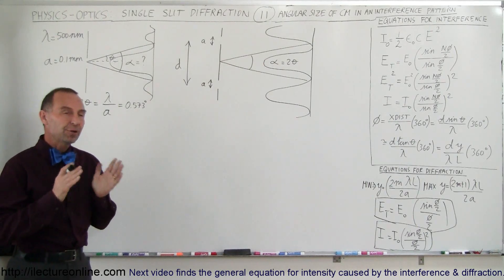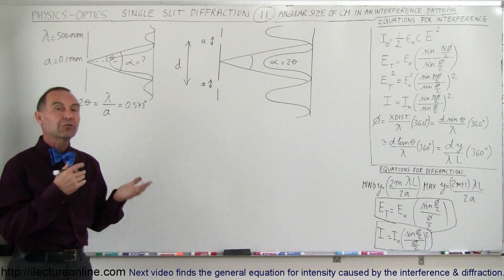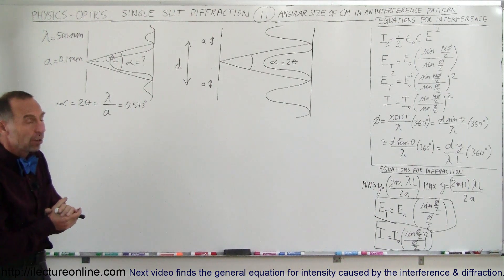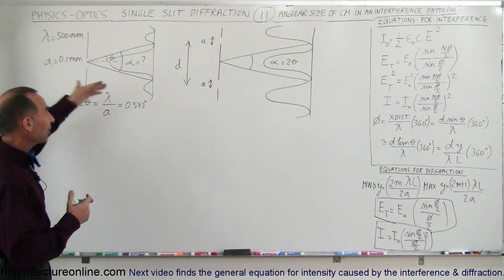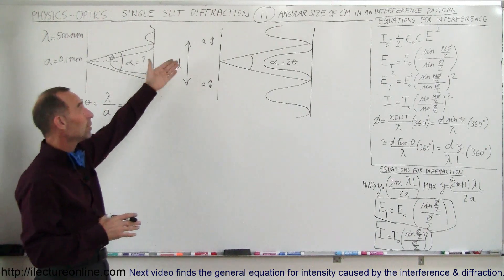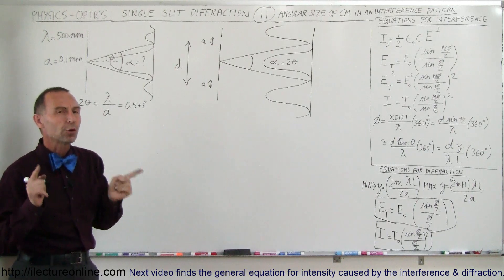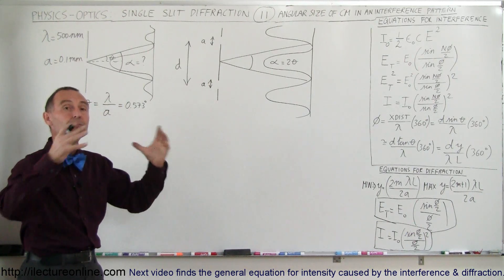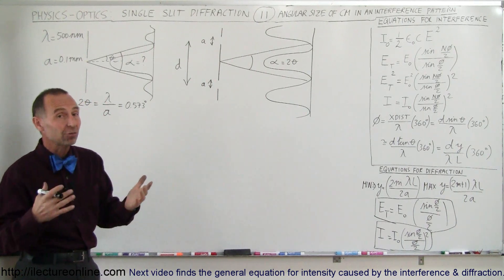Welcome to ElectronLine. In previous videos, we showed you how to find the interference pattern of a double-slit or multi-slit interference problem. In recent videos, we also showed how through a single slit you get a diffraction pattern. But what we've ignored in the past is that even with double slits or multiple slits, not only do we have an interference pattern, we also have a diffraction pattern — and we actually have the two patterns superimposed on each other.